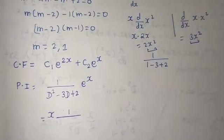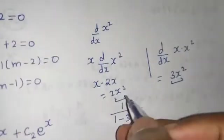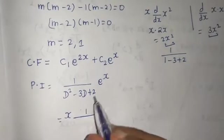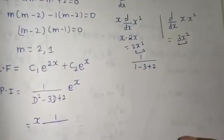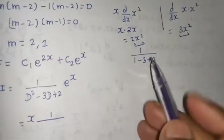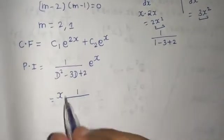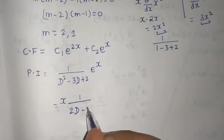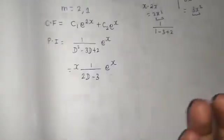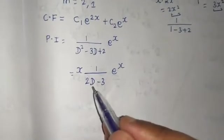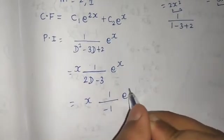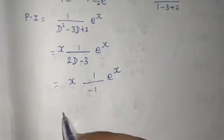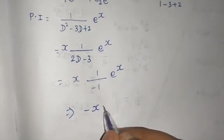Okay, so if you multiply and in the same step differentiate this denominator, so what is the rule? If you get 0 in denominator, then multiply by 1x and differentiate the denominator. So if you differentiate you will get 2D - 3, and this e^x remains. Again use that rule: if you put 1 in place of D you will get 2 - 3, which is -1 operating on e^x. Now there is nothing to operate, just you are getting -xe^x.